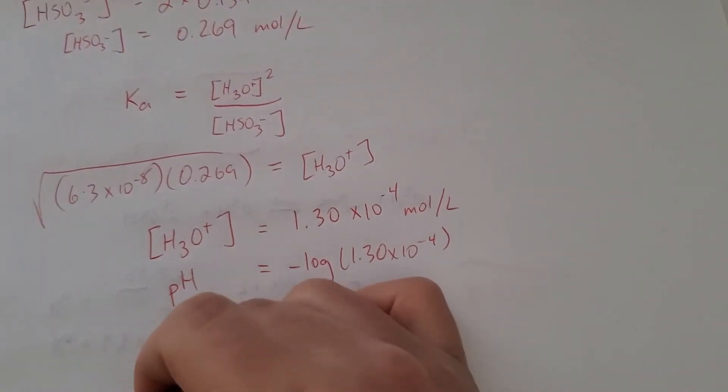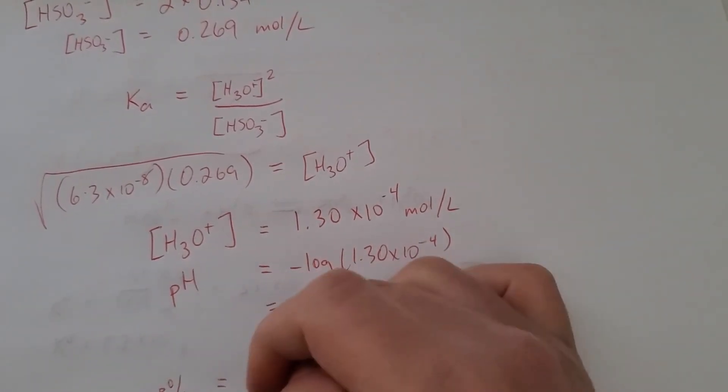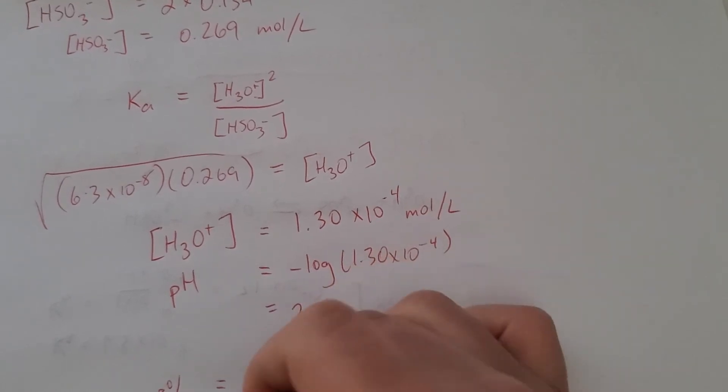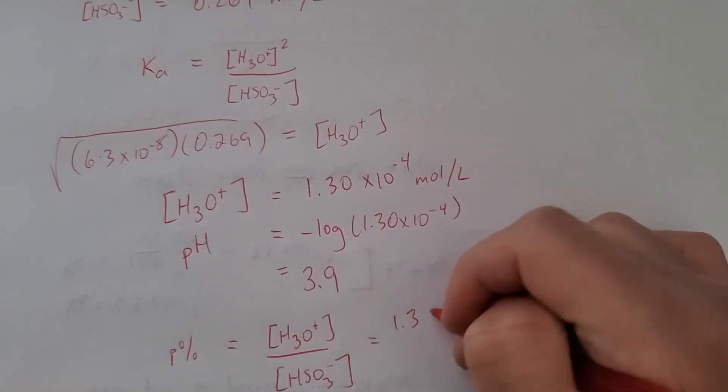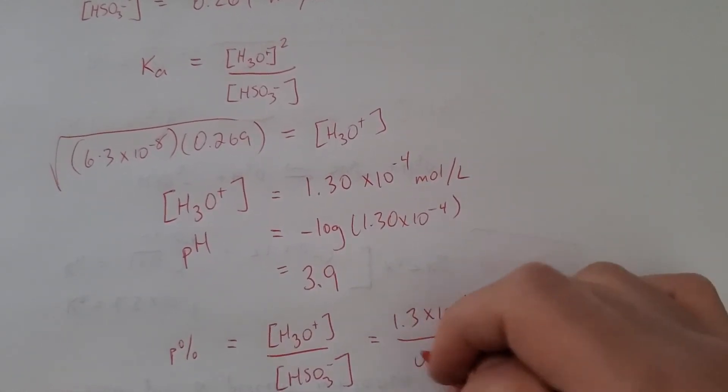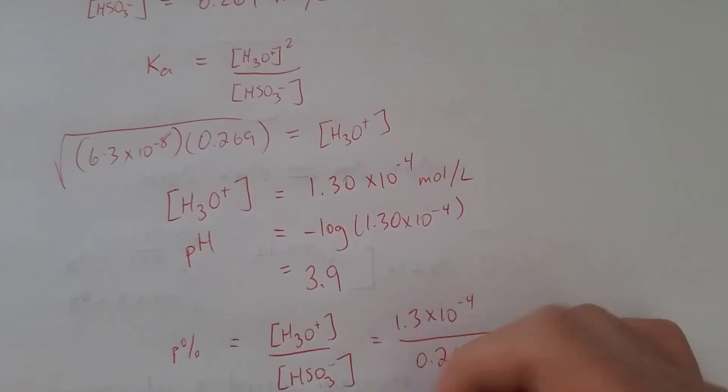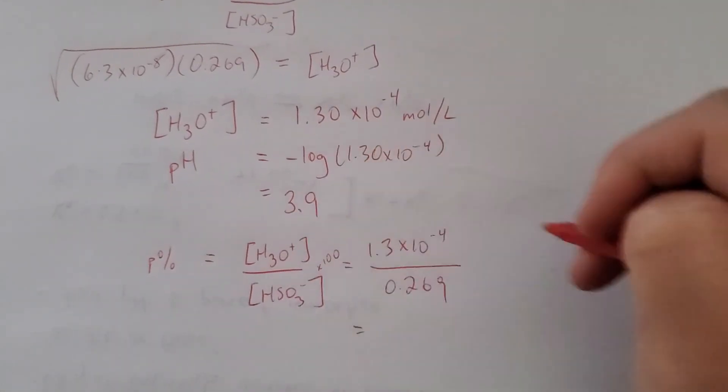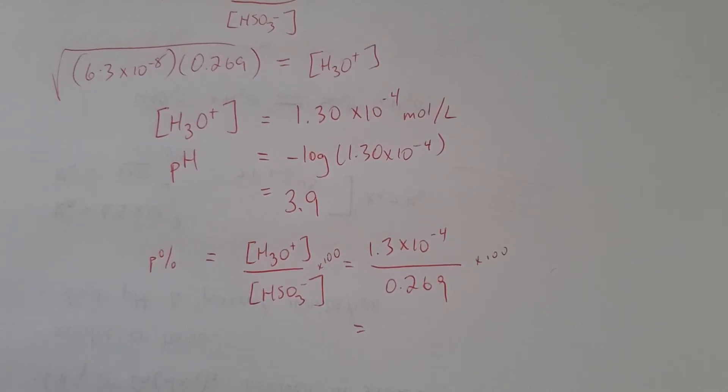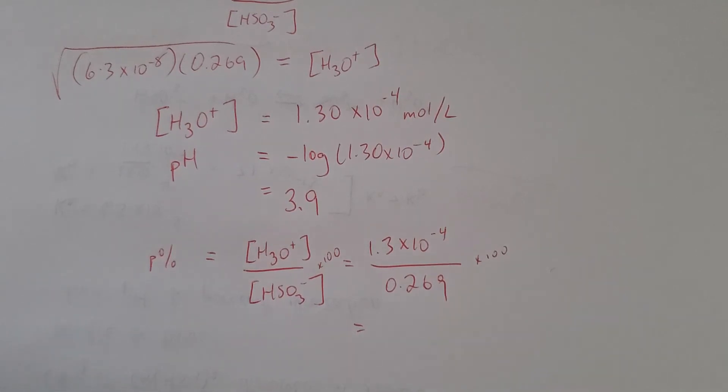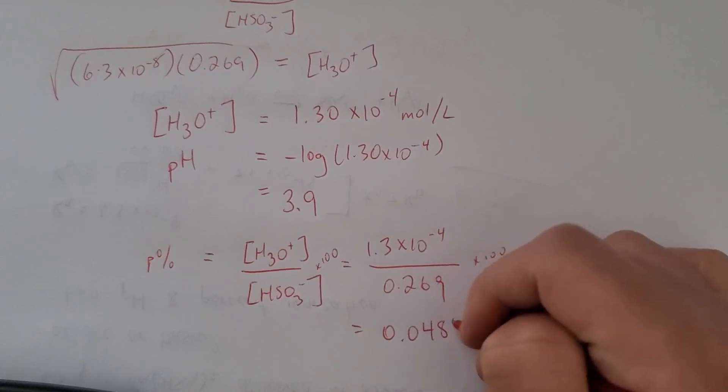For percent ionization, that's the H3O+ concentration divided by your weak acid concentration. And we'll multiply that by 100. Let's see what we get. I get 0.048 percent.